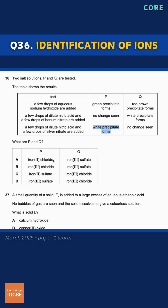So solution P is iron-2 chloride. Substance Q forms a red-brown precipitate when a few drops of aqueous sodium hydroxide are added, so it must contain iron-3 ions. And a white precipitate when a few drops of dilute nitric acid and barium nitrate are added.